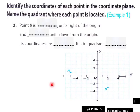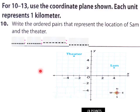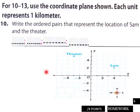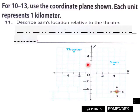Page three of our homework: same thing — identify where your points are and give them as an ordered pair. Page four: same thing using a coordinate plane where each unit represents one kilometer — write ordered pairs to represent the location of Sam and the theater.